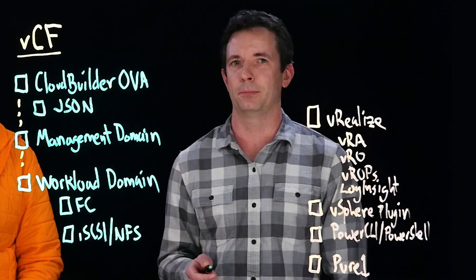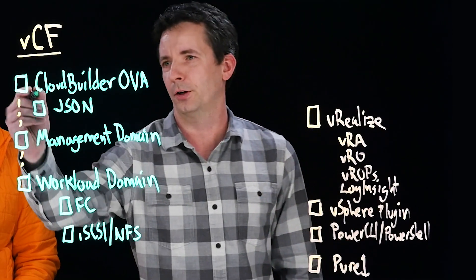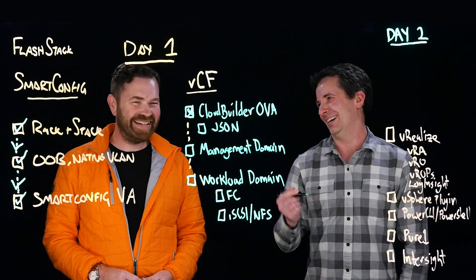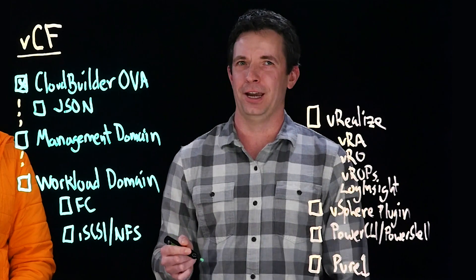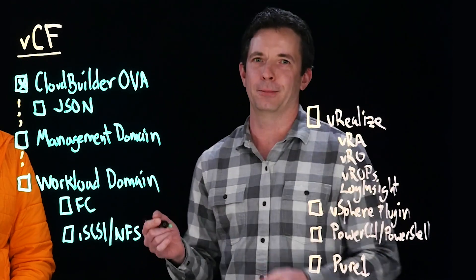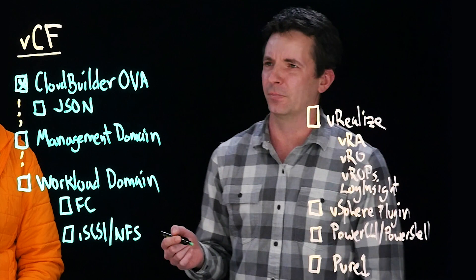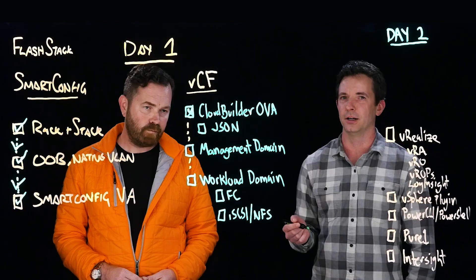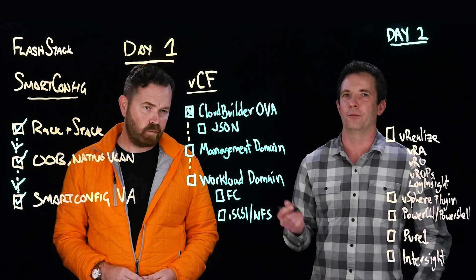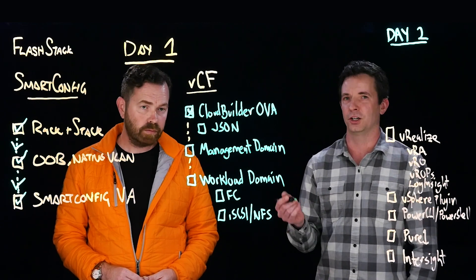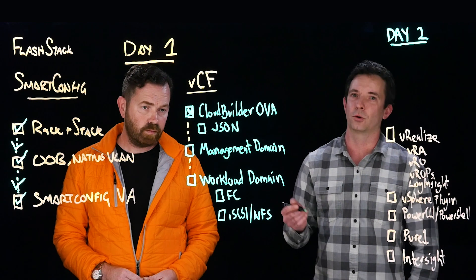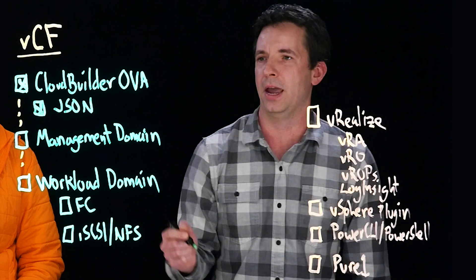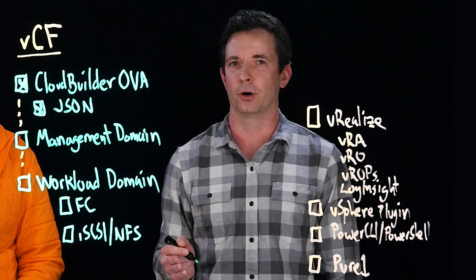The first step is to deploy the Cloud Builder OVA. That Cloud Builder OVA can be deployed on VMware Fusion or on a pre-existing VMware environment. What you get from that is you download a JSON file or an Excel spreadsheet, and within that Excel spreadsheet you populate it with a lot of your environmental details — naming conventions, VLANs, datastore names — all the stuff that's really required to deploy that initial management domain within VMware Cloud Foundation.